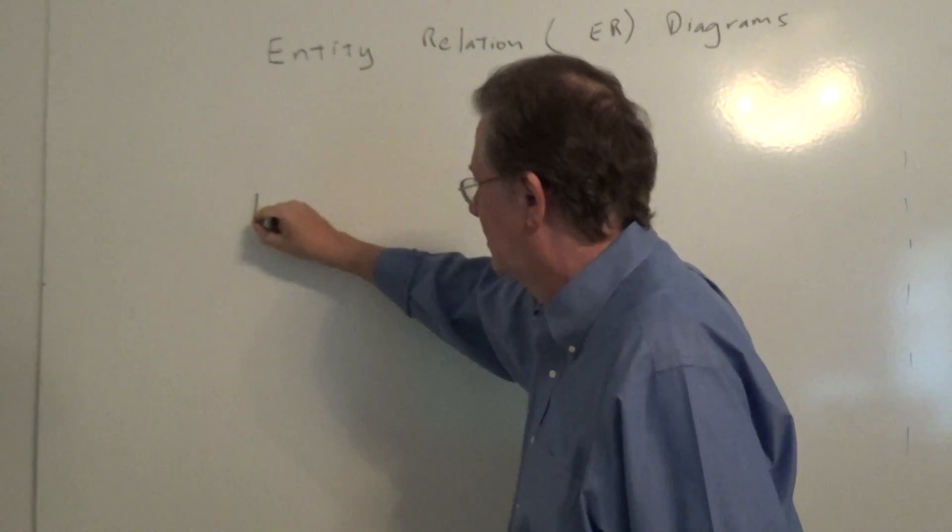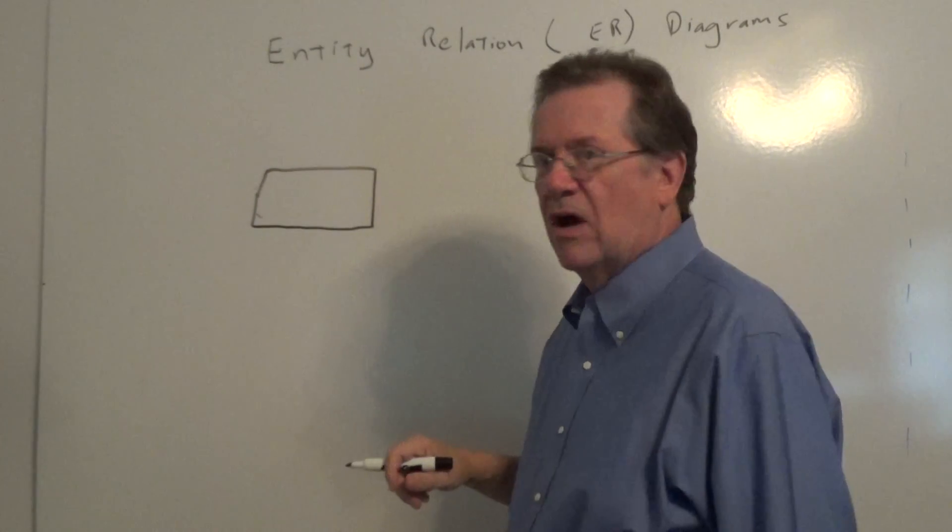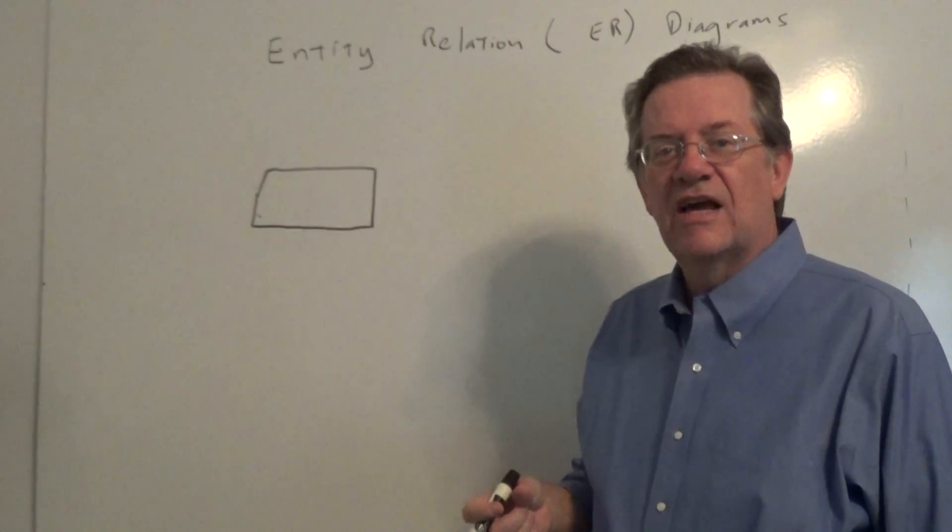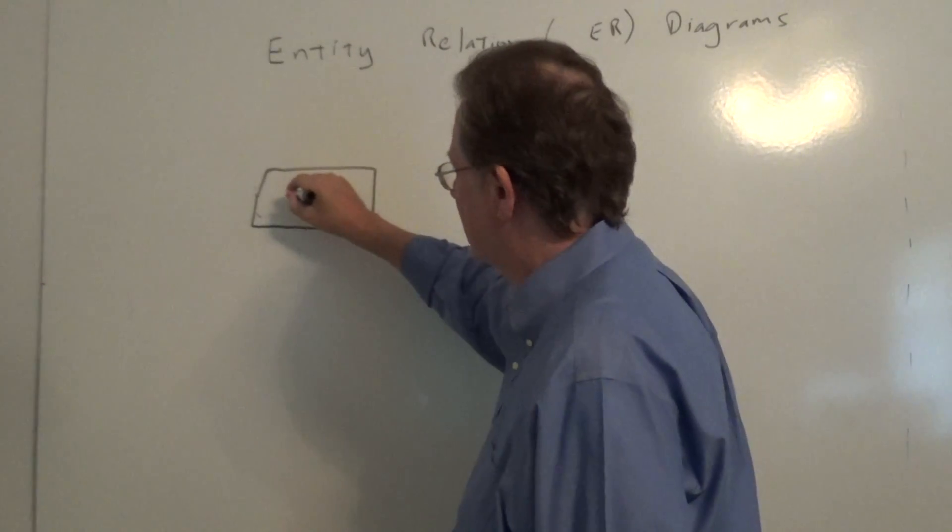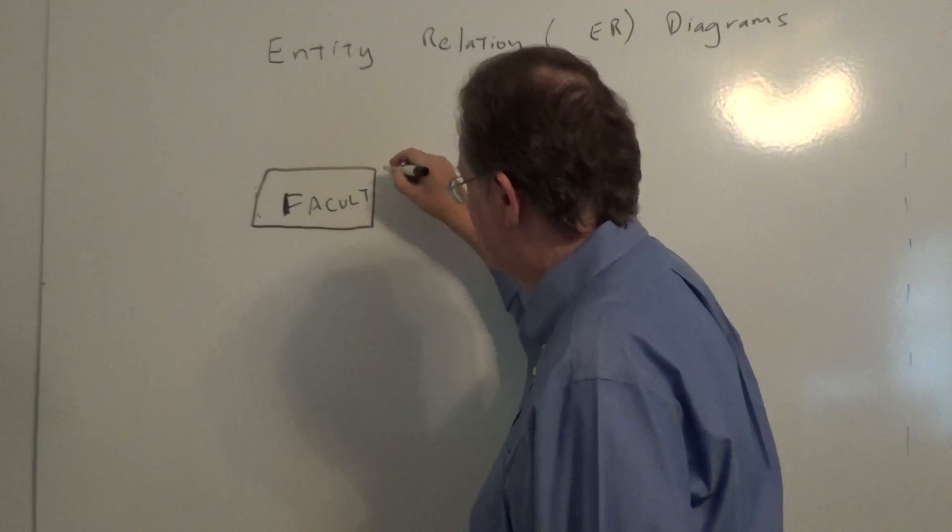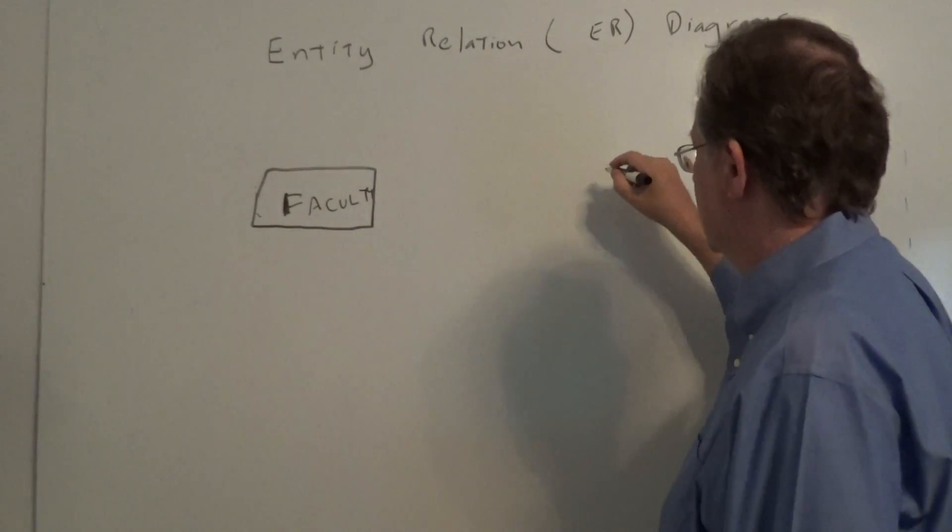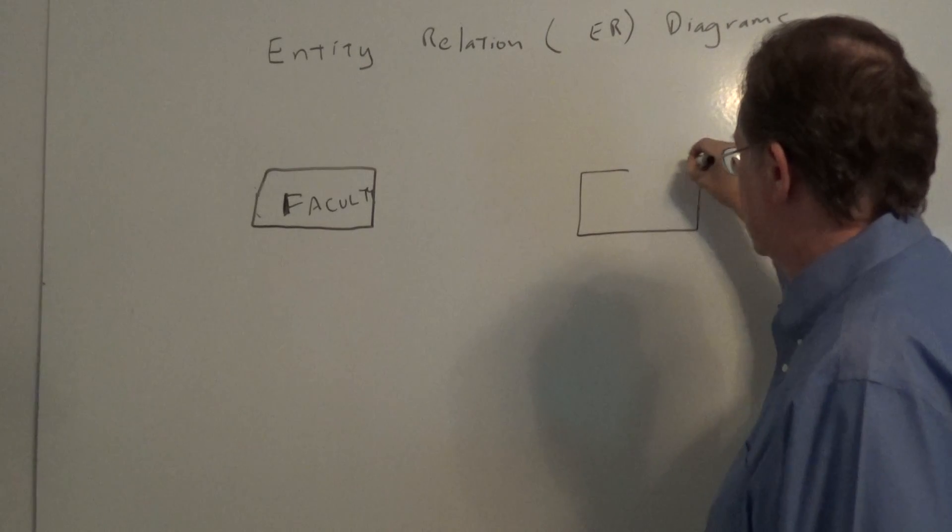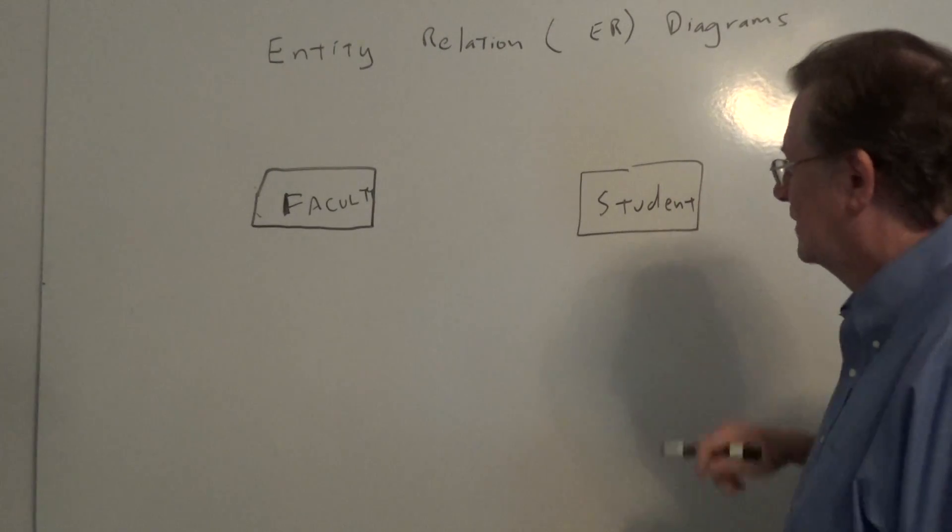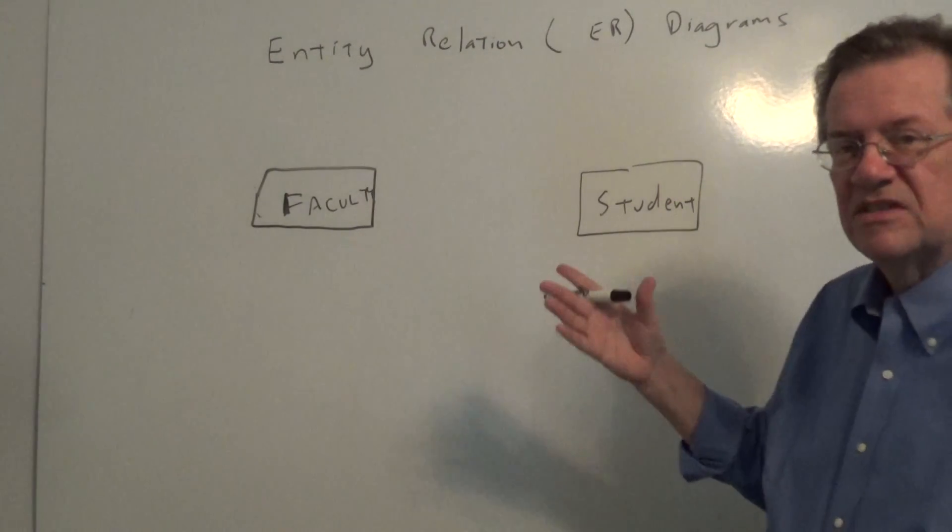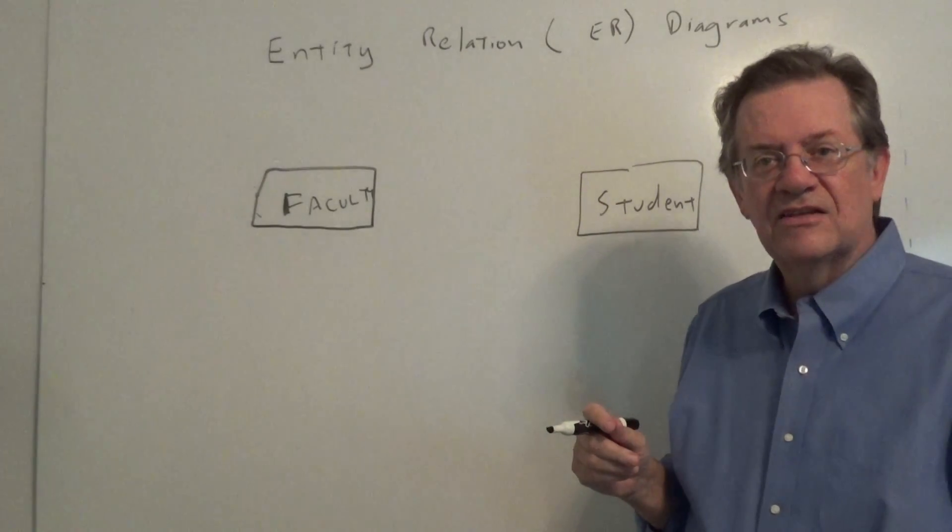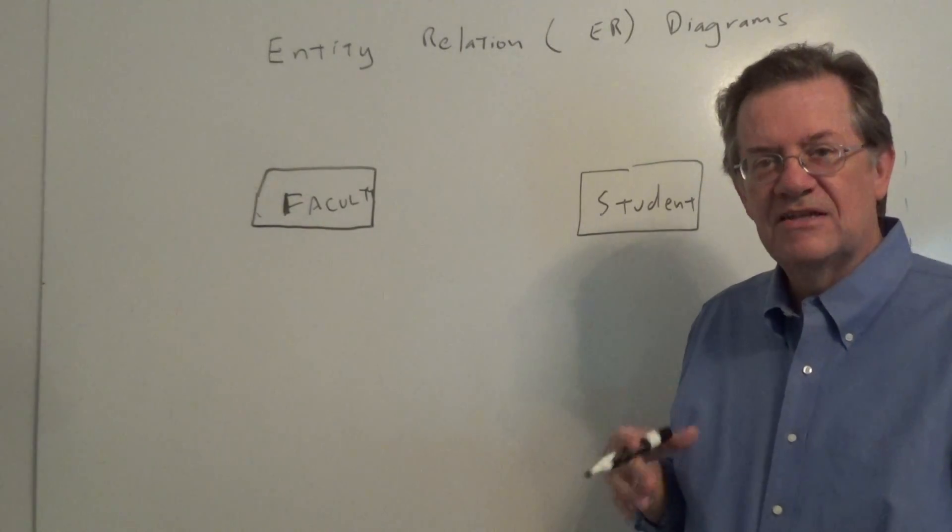A little example here. And we're going to use these rectangular boxes to represent the entities which are like the nouns or the objects within the system. And let's say, for example, we have a faculty box over here. And over here we're going to place a student object. We specify the objects or in this case the entities, faculty, and student with these rectangular boxes. Typically they map to database tables in the system.